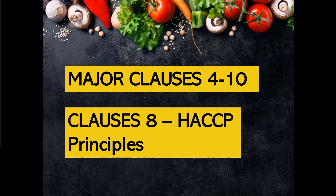The major clauses for implementing a food safety management system are found in clauses 4 to 10. Clause 8 covers the HACCP principles. HACCP stands for Hazard Analysis Critical Control Point, and we also have a video on our channel that describes exactly what HACCP principles are. Basically, it's a methodology of risk assessment when looking at food to determine if there are any potential hazards and how you would control and prevent them from occurring.